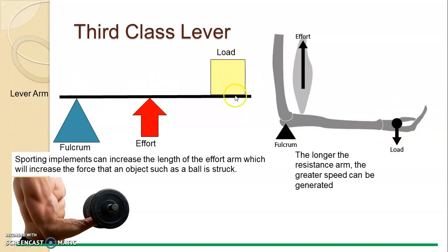That tells us there is a disadvantage. Remember, FLE equals 1, 2, 3. E is in the middle, it's a third class lever.